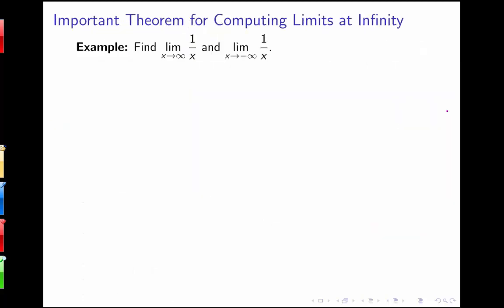We'll always write horizontal asymptotes as equations y = some number. Besides reading them from graphs, we also want to compute limits at infinity algebraically. Let's think about the limit as x goes to infinity of 1/x. As x gets larger and larger — 1/100, 1/1000 — the output gets smaller and smaller. So the limit as x goes to infinity of 1/x is 0, which we can also see from the graph of 1/x approaching the x-axis.